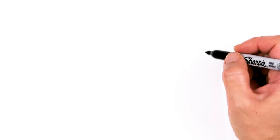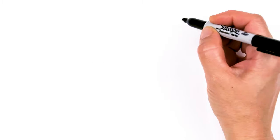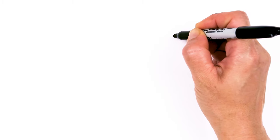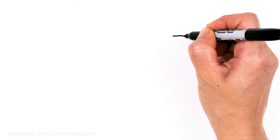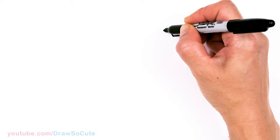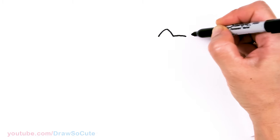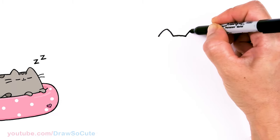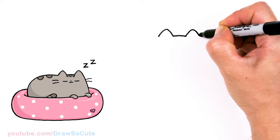To draw sleepy Pusheen, let's first start by drawing a curve for the top of her head. I'm going to come right here and just draw a soft curve right in the center, and then I'm going to go up for her ears. So go up, round off the tip and down. And same thing over here. Up, down.